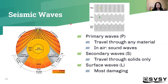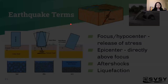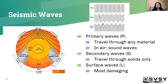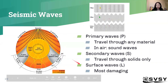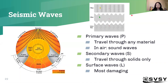Seismic waves are those concentric circles from earlier — that's how the energy is released from an earthquake. There are three main types of seismic waves, ordered from fastest to slowest. Primary waves travel the fastest and can travel through any medium: solid, liquid, or gas. In air they are actually sound waves, so they move at the speed of sound.